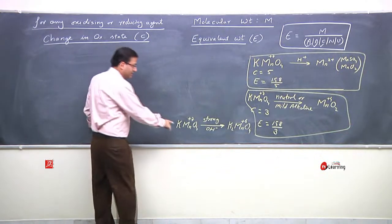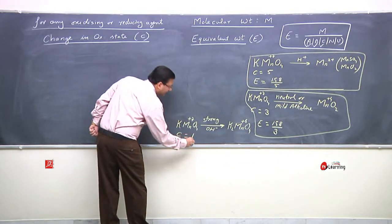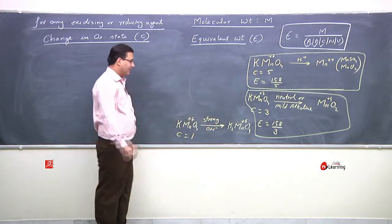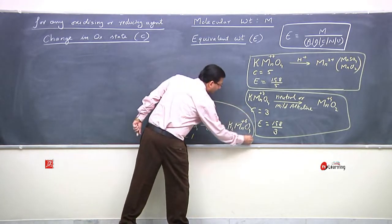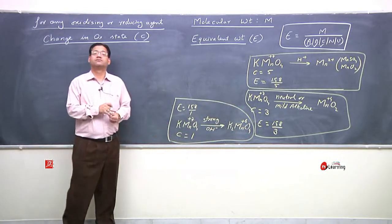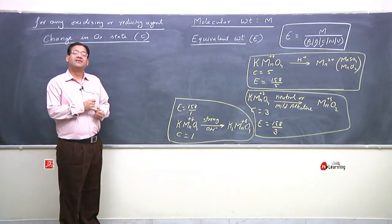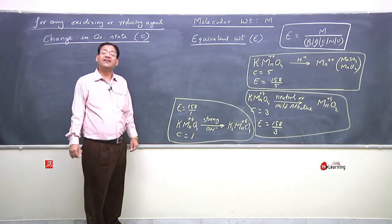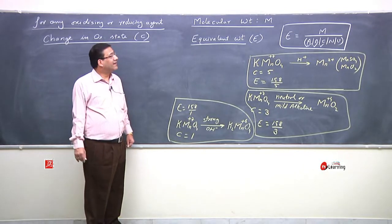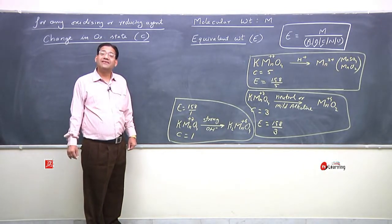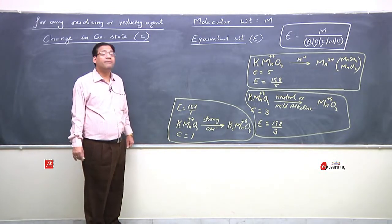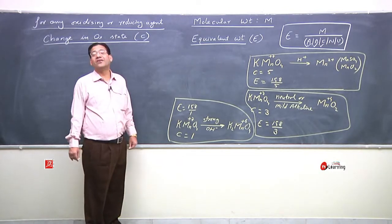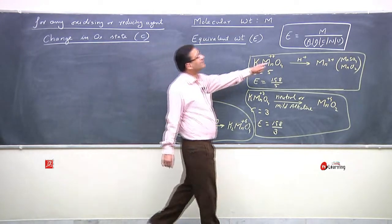In strong alkaline medium, Mn goes from +7 to +6, so the change in oxidation state is 1. The equivalent weight in this situation is 158 upon 1. Observe the three different values of equivalent weight of KMnO4 under three different conditions. Molecular weight remains the same, but equivalent weight differs according to the condition — specifically, according to the change in oxidation state. Here C denotes change in oxidation state: molecular weight upon change in oxidation state.